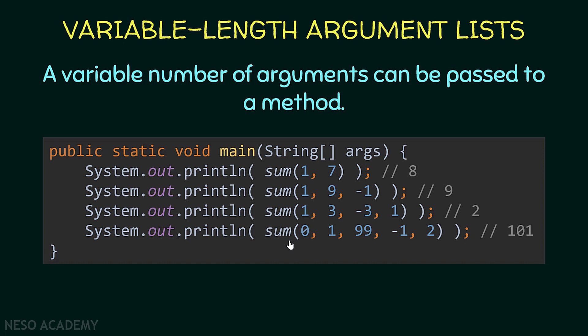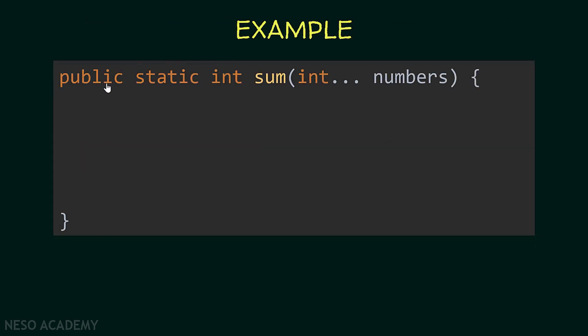Let's see how we can implement a method that takes a variable number of arguments. We define the method sum — it is a public and static method that returns an integer, which will be the sum of the arguments. To pass a variable number of arguments, first we specify the type of the arguments — in this case, integers — and after that we put three dots. This is called an ellipsis. Using these three dots, we specify that we want a variable number of arguments, followed by an identifier. In this case, I'm calling this parameter numbers.